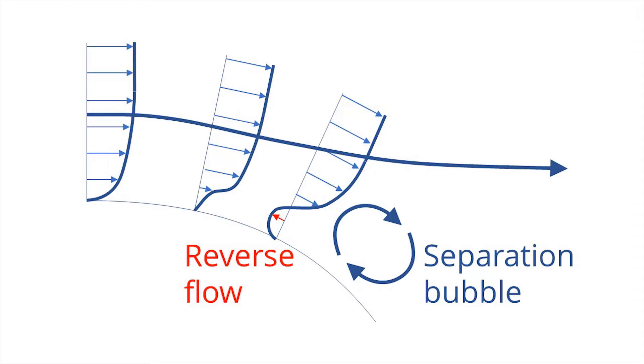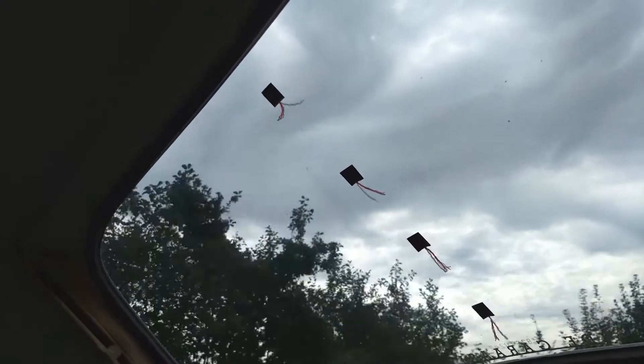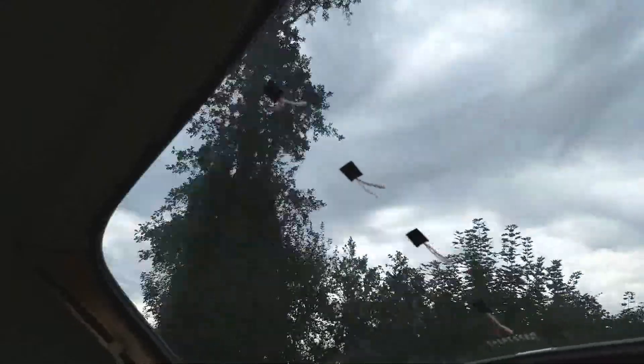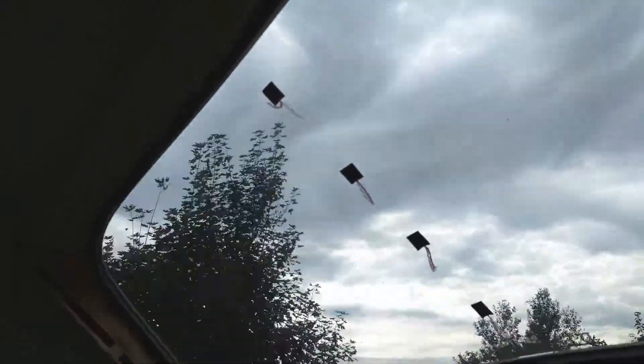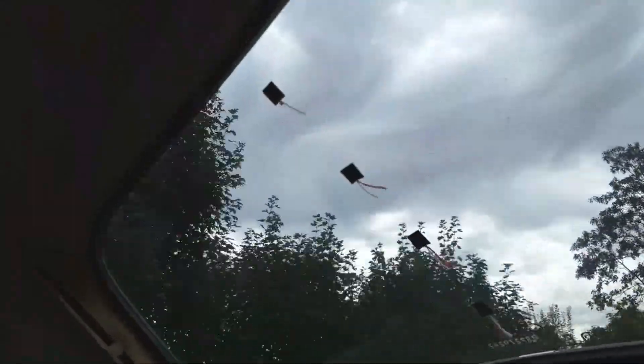Locally, the velocity profile can even feature a reverse flow caused by an adverse pressure gradient, creating a rotating separation bubble. We saw this in our last Beetle test, where the dust close to the top of the window was moving in the opposite direction towards the roof of the car.